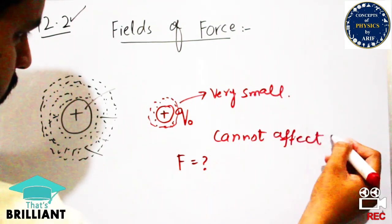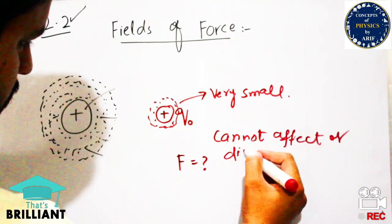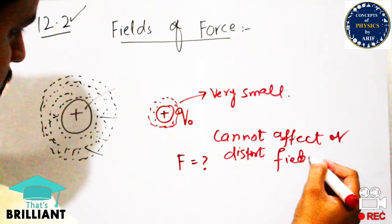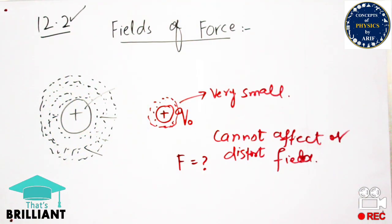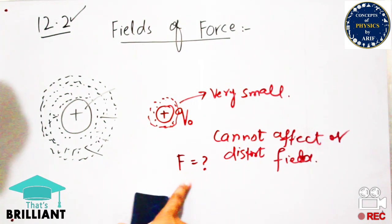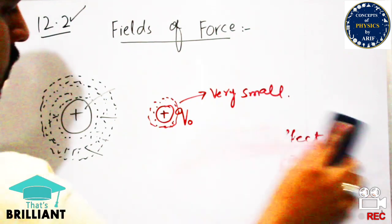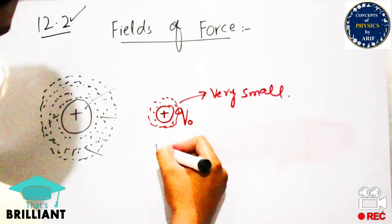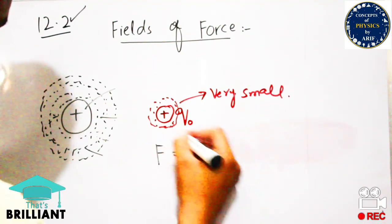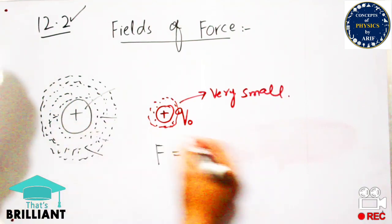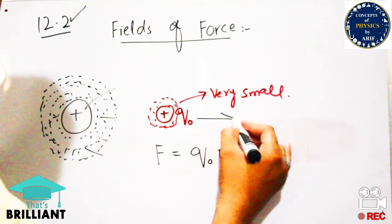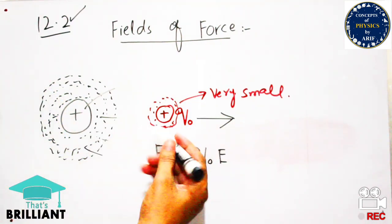This point charge is very very small — it cannot distort the electric field lines. It can only feel them. When we move the point charge close to the source charge, the electric field lines cannot be distorted; we only feel a force in the direction of the electric field. So the direction of the electric field is the same as the direction of force.